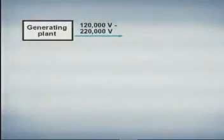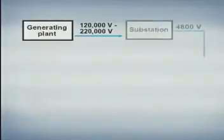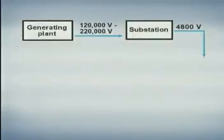The voltage generated at a power plant is often in a range of 120,000 to 220,000 volts. With the aid of step-down transformers, the voltage is reduced to about 4,800 volts at strategically located substations.